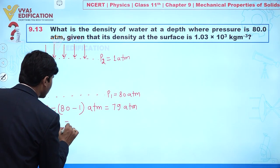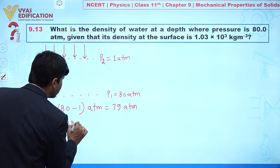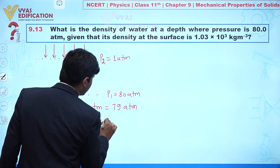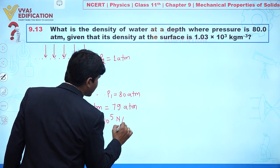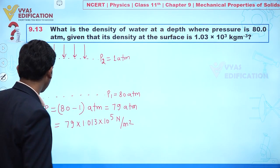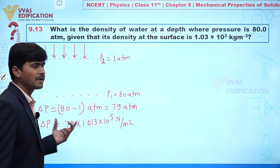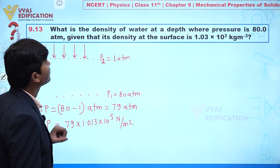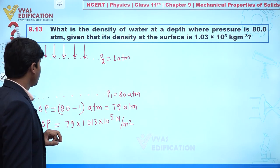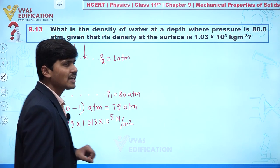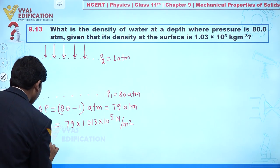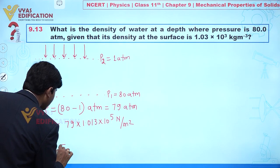So ΔP = 79 × 1.013 × 10⁵ N/m². This is the value of ΔP. Now we can calculate the fractional change in volume, ΔV/V.